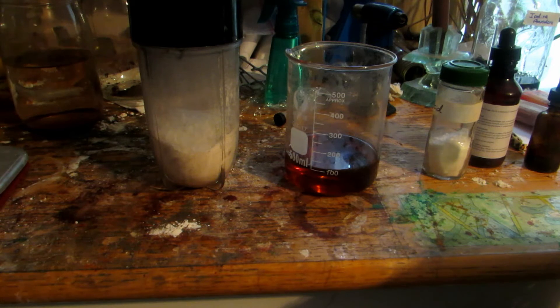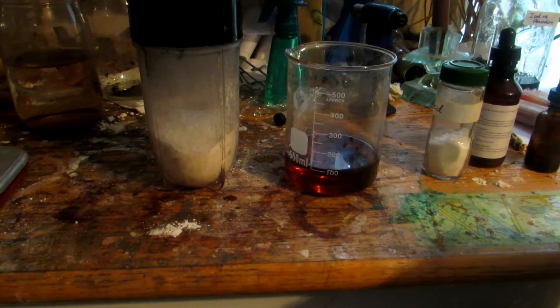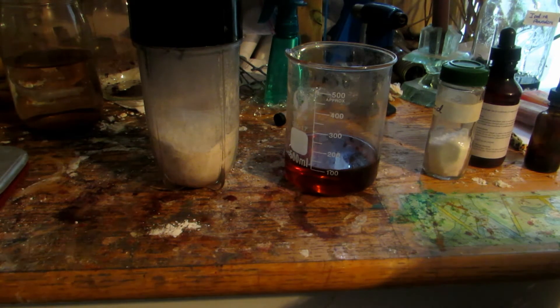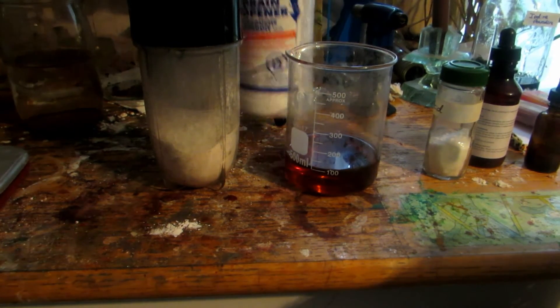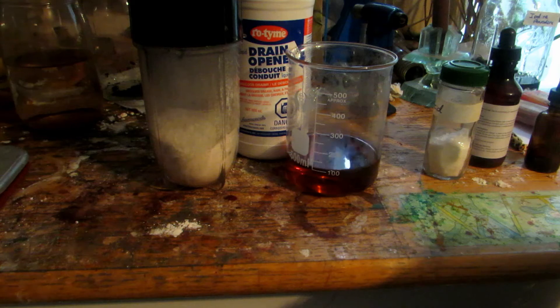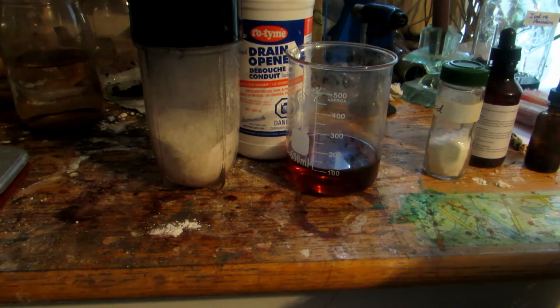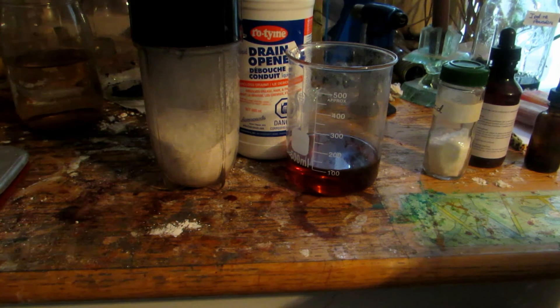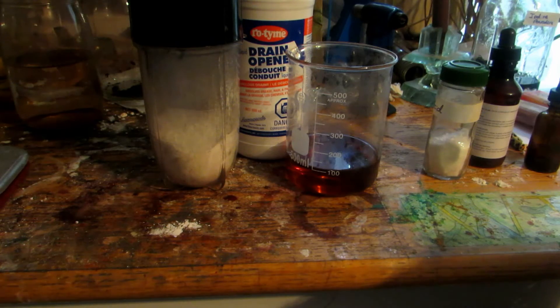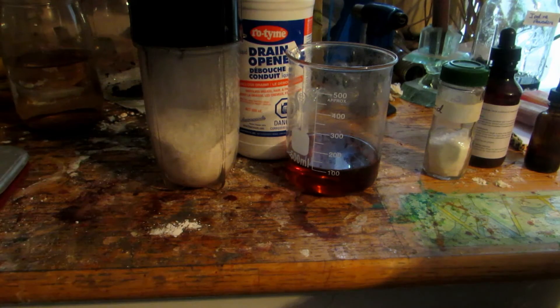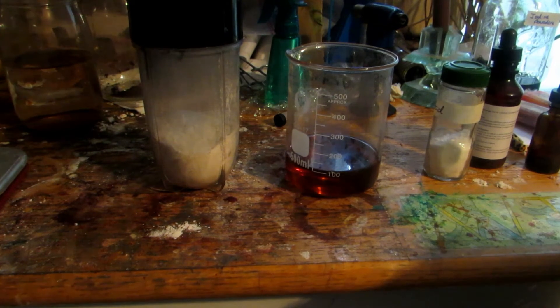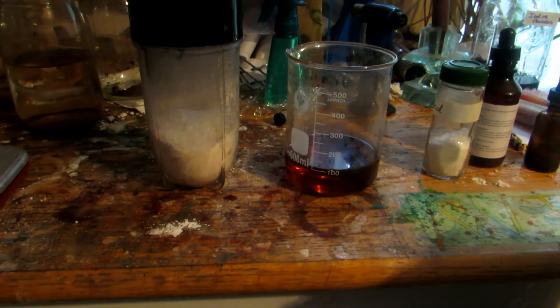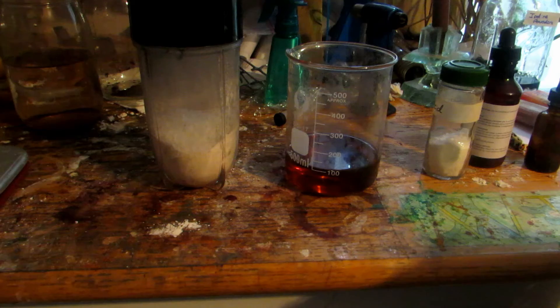Anyhow, so basically what we need to start with is about 115 milliliters of sulfuric acid drain cleaner. It's just this stuff right here, Rooto drain cleaner. It says contains sulfuric acid. It's about 90% sulfuric acid. There's a lot of additives so it's brown. But this can be picked up at Canadian Tire. That's where I got this. And it's not too expensive, probably $4 or $8. I can't remember the exact price, but it's pretty cheap.